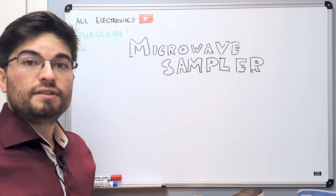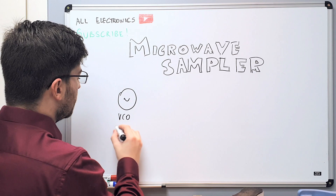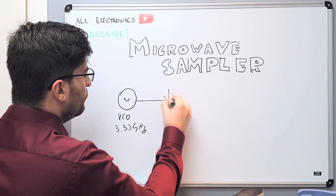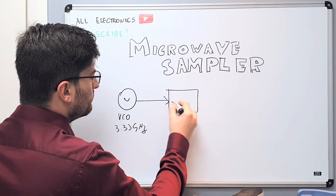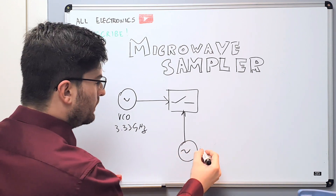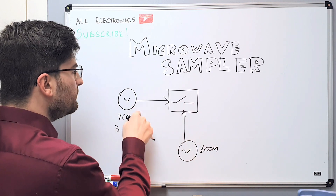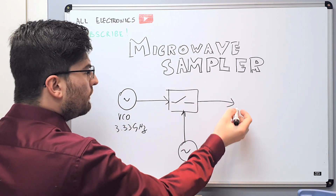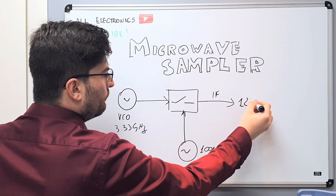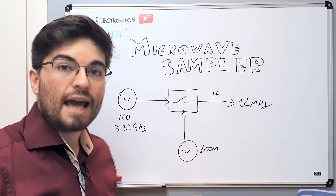The PLL of the 10 GHz source works like this. We have the VCO generating 3.33 GHz, and this signal will enter the sampler using a much lower frequency LO that will be close to 100 MHz. The sampler will down-convert the VCO signal to a much lower frequency IF, which will be close to 12 MHz. So we can see that the sampler uses harmonic action.